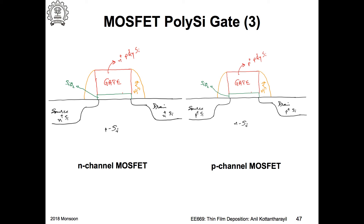The structure looks identical. Now, what is the problem? For making P-type source and drain by implantation, you do not have many choices. The most common dopant used is boron — hardly any other dopant is used.